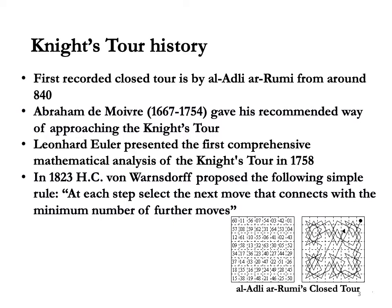The knight's tour has been the pet project of many inquisitive minds throughout history, starting with a closed tour by Al-Adli Al-Rumi from around 840. Al-Adli Al-Rumi lived in Baghdad and is known to have written a book on Shatran, the old form of chess played in the Neo-Persian Empire. He was also an avid Shatran player himself. The diagram shows the closed knight's tour made by Al-Adli Al-Rumi.